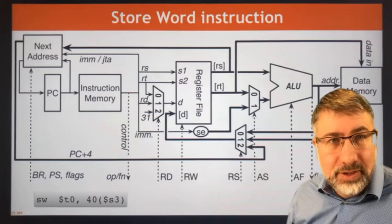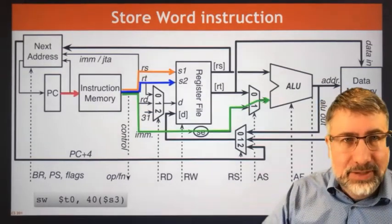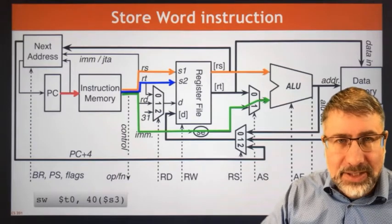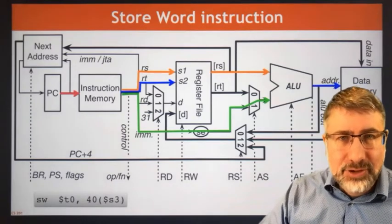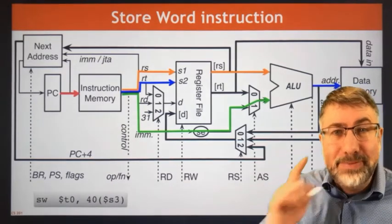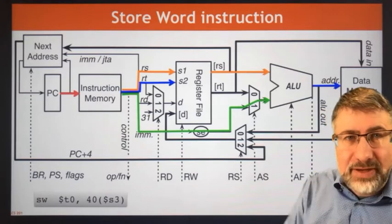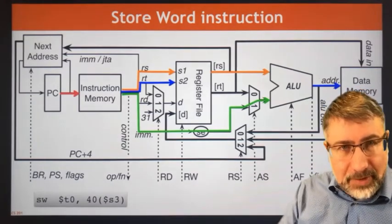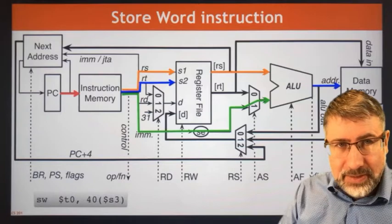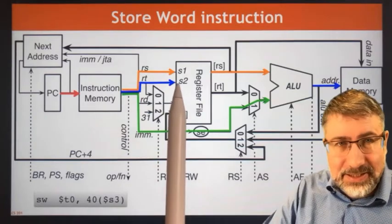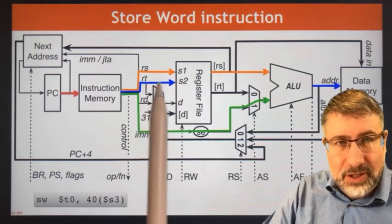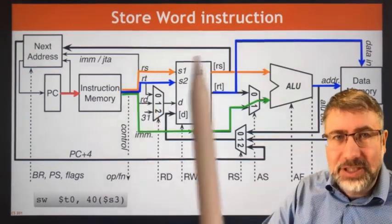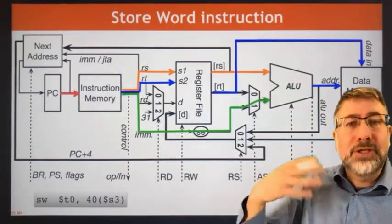With store word, it's exactly the same process — we address instruction memory, find the immediate value and RS, add them together, and use the sum to address data memory. But now, instead of storing a value into RT, we're loading a value from RT. RT addresses the register, so S2 is RT, and the value of RT is presented to data memory to be stored there.